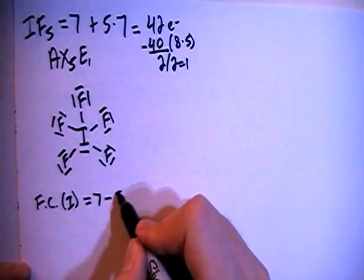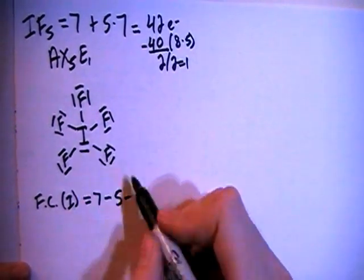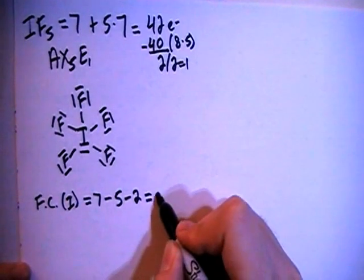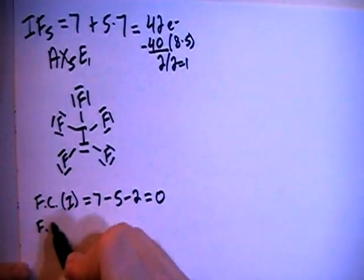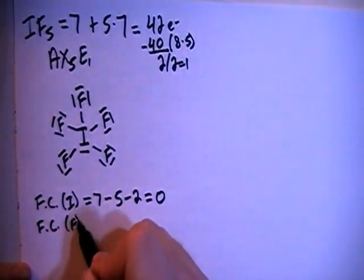Four, five bonds minus one, two non-bonding electrons for a formal charge of zero.